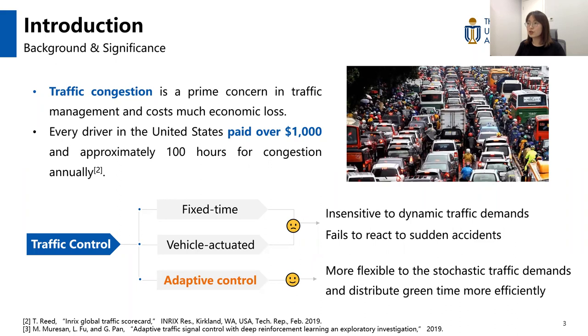However, the first two methods have shortcomings: they are insensitive to dynamic traffic demands and fail to react to sudden accidents. The third method, adaptive signal control, can overcome those shortcomings. It is more flexible to stochastic traffic demands and can distribute green time more efficiently.